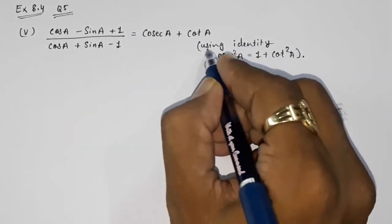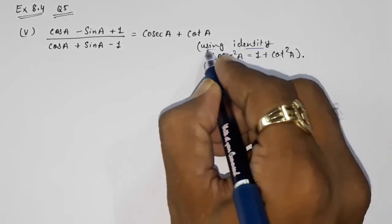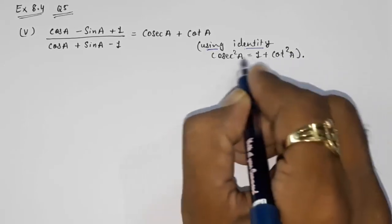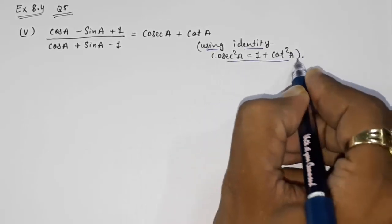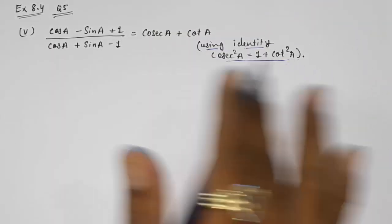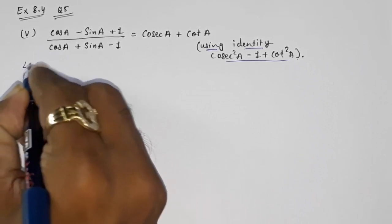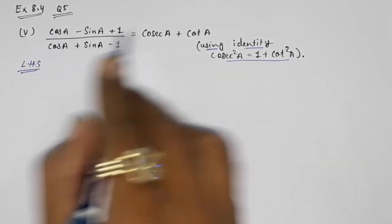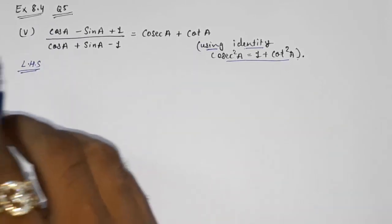They had given that we have to solve using the identity cosec²A equals 1 plus cot²A, so we have to use that only. Now what we have to do: first we are going to solve this LHS and we are going to find this RHS from that.